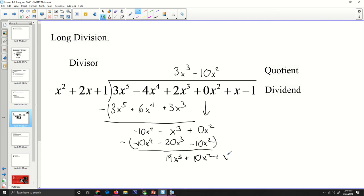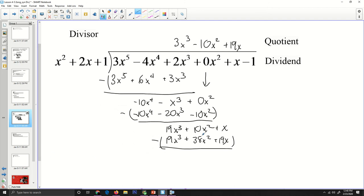Just like in the first one, we only care about this first term of both the divisor and this new portion of the dividend. I ask myself, what times x squared is negative 10x to the 4th? Well, negative 10x squared. If you didn't put this placeholder in, you wouldn't have any place for this negative 10x squared. Negative 10x squared times x squared is negative 10x to the 4th. Negative 10x squared times 2x is negative 20x to the 3rd, and negative 10x squared times 1 is negative 10x squared. Now, I'm going to subtract that. Subtract the negative is like plus positive, so these cancel. Negative x to the 3rd minus negative 20x to the 3rd is going to be 19x to the 3rd. Then, 0x squared minus negative 10x squared is going to be positive 10x squared. When I bring down the x, I'm going to have that.